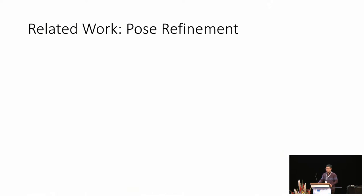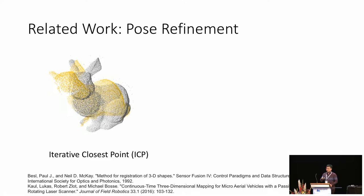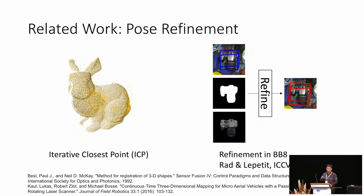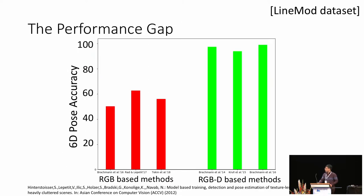Pose refinement is widely used to improve pose accuracy. When depth images are available, most methods use the Iterative Closest Points algorithm, ICP, to refine their poses. For RGB-only methods, given an initial pose estimate, a synthetic RGB image can be rendered and used to match against the target input image.